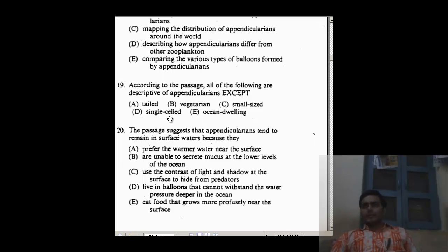It's tailed - okay, it's possible, the tail thing was mentioned. It's vegetarian - maybe, because this animal talks about that plant, maybe it is vegetarian. Small size - they are single celled. Now we can know that from our pre-knowledge, extra knowledge. We quite understand that this is not single celled because single celled is amoeba and it is made up of all these other things.